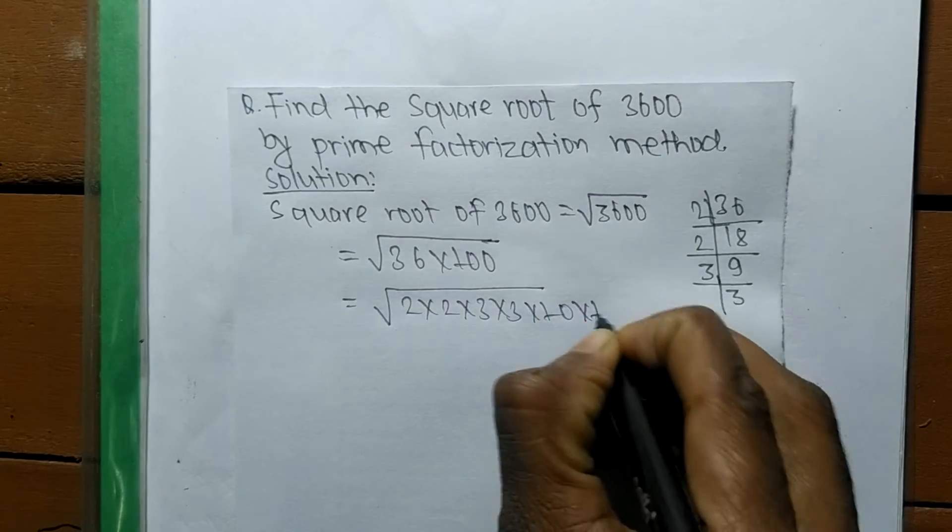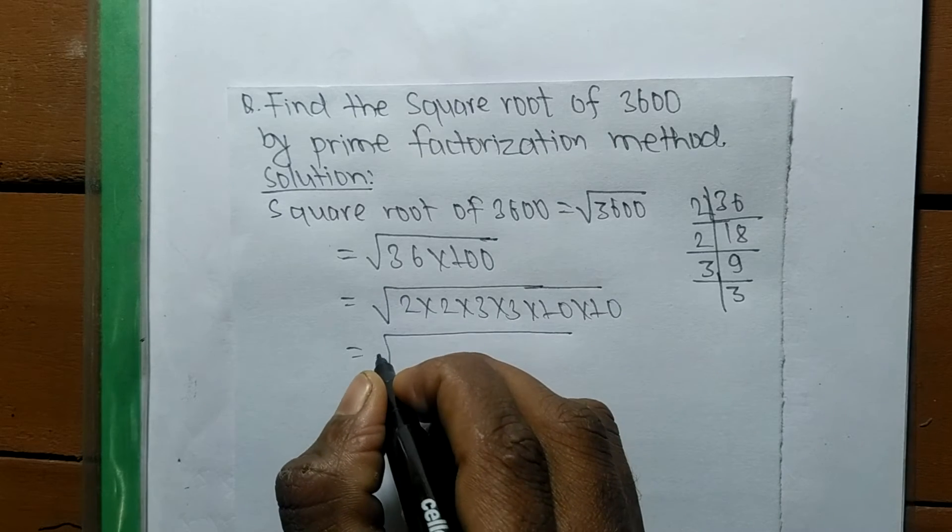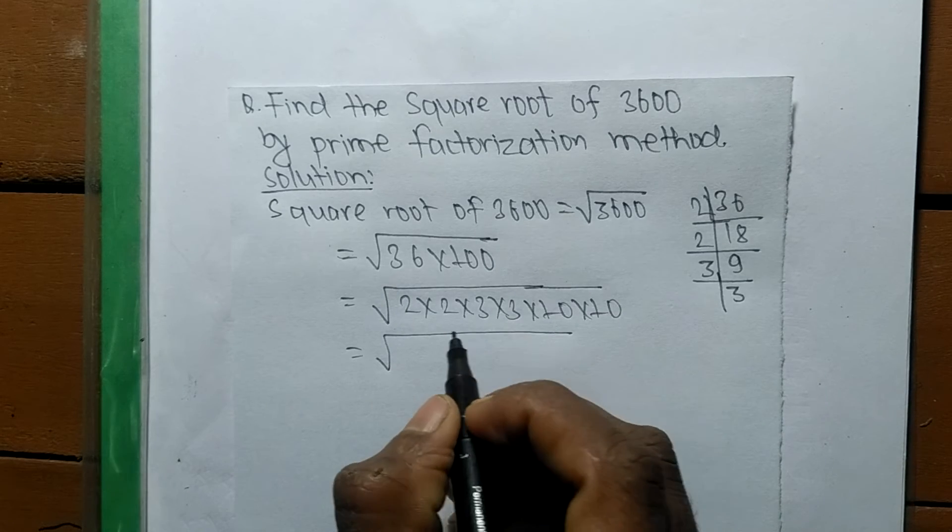100 is equal to 10 into 10. Now we are finding here a square root, so now we make the square of these prime numbers.